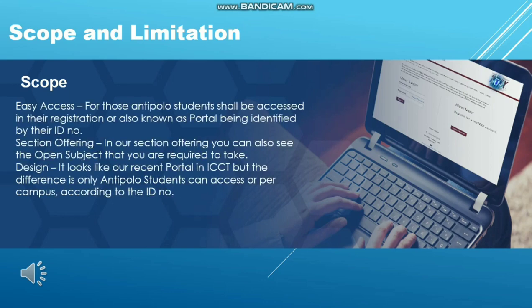Scope and Delimitation. Scope: Easy access — all Antipolo students shall be able to access their registration, also known as the portal, being identified by their ID number. Second, section offering — in the section offering, students can also see the open subjects they are required to take. The design looks like the current portal in ICCT, but the difference is that only Antipolo students can access it per campus according to their ID number.